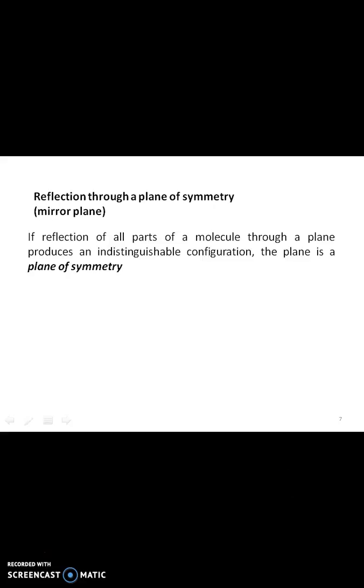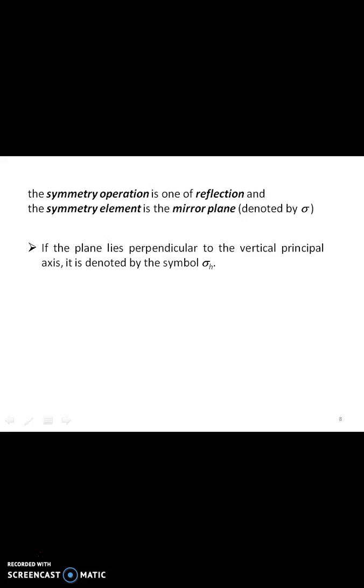Next comes reflection through a plane of symmetry, or mirror plane. If the reflection of all parts of a molecule through a plane produces an indistinguishable configuration, the plane is a plane of symmetry. The symmetry operation is one of reflection and the symmetry element is a mirror plane, denoted by the symbol σ. If the plane lies perpendicular to the vertical principal axis, it is denoted by σh. If the plane contains the principal axis, it is labeled as σv.